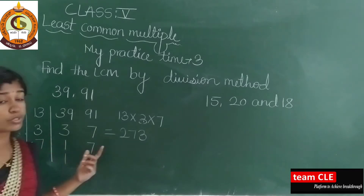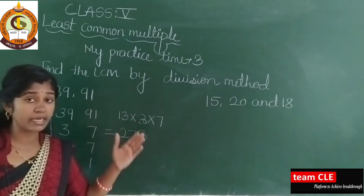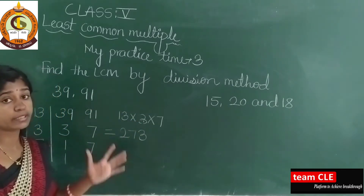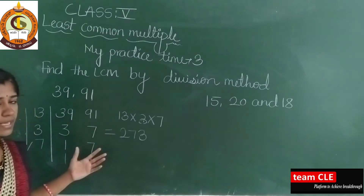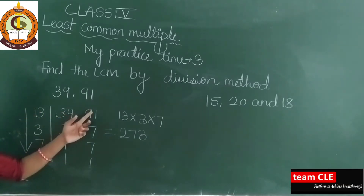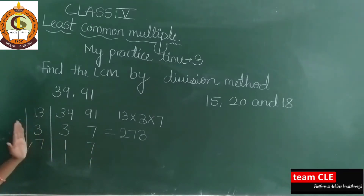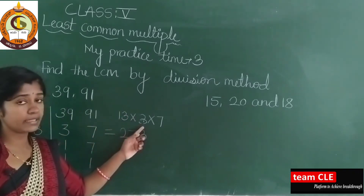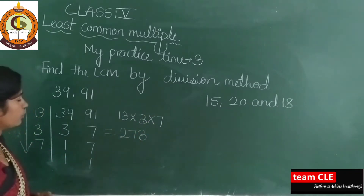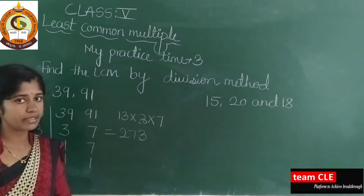See here, dear students — if you use the multiple method you have to write 39, then write 39 again, then 39 ones are table and again circle the common multiple. Instead of doing that method, we are using this division method and it is very easy. 13 threes are 39, 13 sevens are 91, 3 ones are 3, 7 ones are 7. Multiply: 13 × 3 × 7 = 39 × 7 = 273. Therefore the LCM of 39 and 91 is 273.